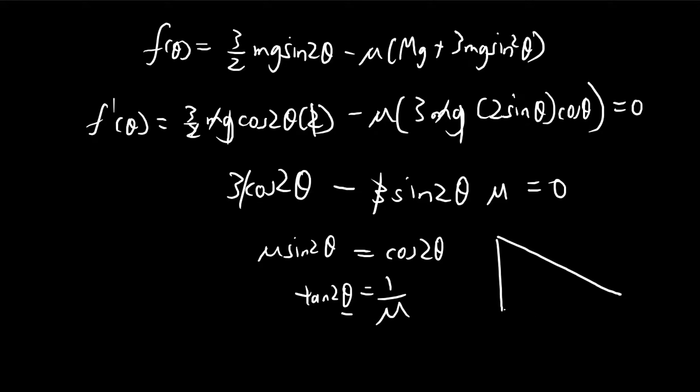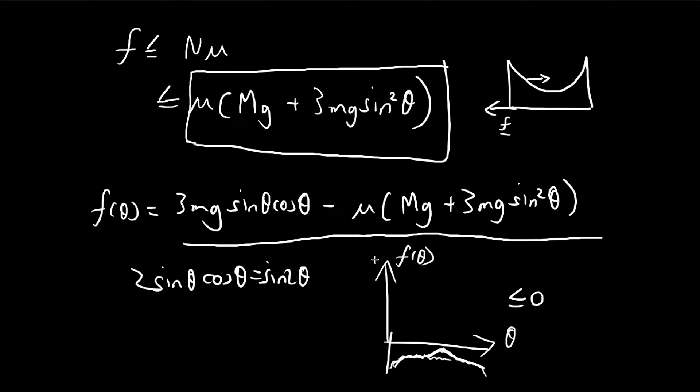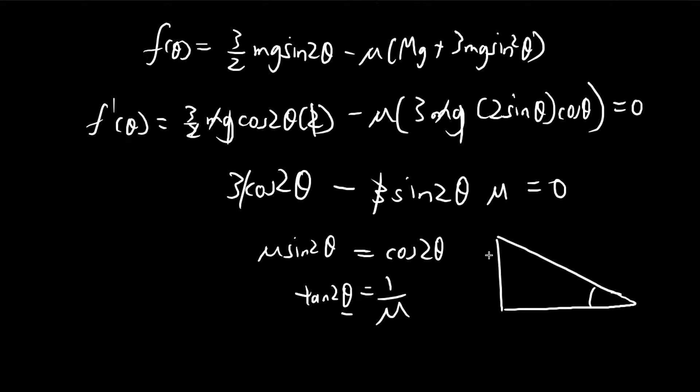So you can kind of imagine this 2 theta. So this is the theta which maximizes this function. And that theta is set to be at a certain value such that it corresponds to this triangle.